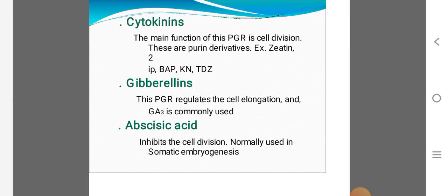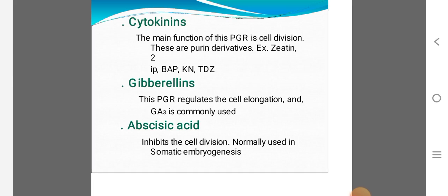Then cytokinin, it is also plant growth regulator used for the cell division. Here, purine derivatives are present. Examples: BAP, benzyl aminopurine; kinetin, KN; TDZ, thidiazuron. These are active cytokinins used in producing.